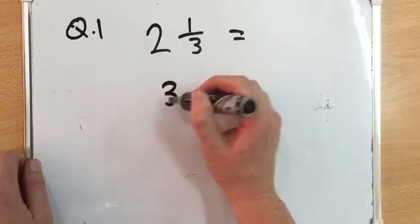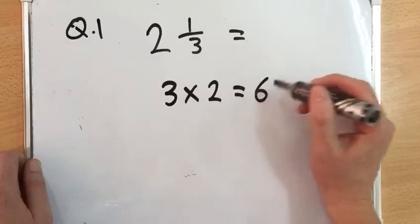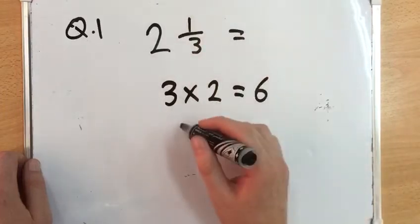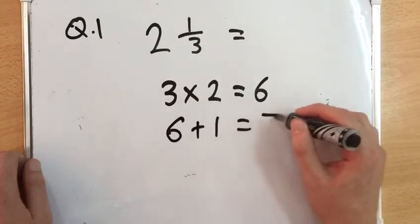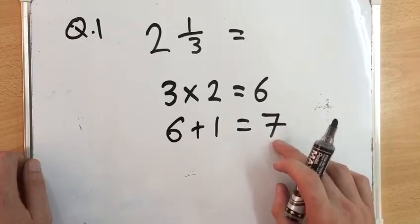So we go 3 multiplied by 2, which equals 6. We then take this answer and add it to our numerator. So we go 6 plus 1 equals 7.